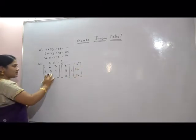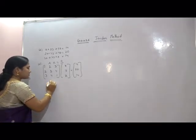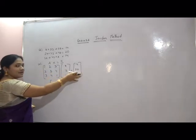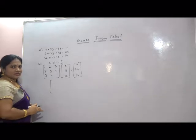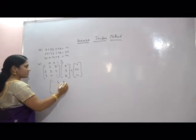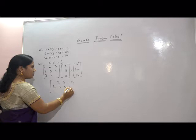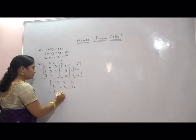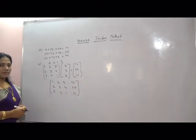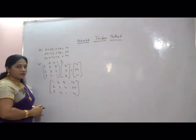The next step is to write the augmented matrix, which combines the coefficient matrix and the constant matrix. The augmented matrix is: [1, 2, 3 | 14], [2, 3, 4 | 20], [3, 4, 1 | 14]. Then the next step is to apply elementary row transformations to reduce this matrix to diagonal form.